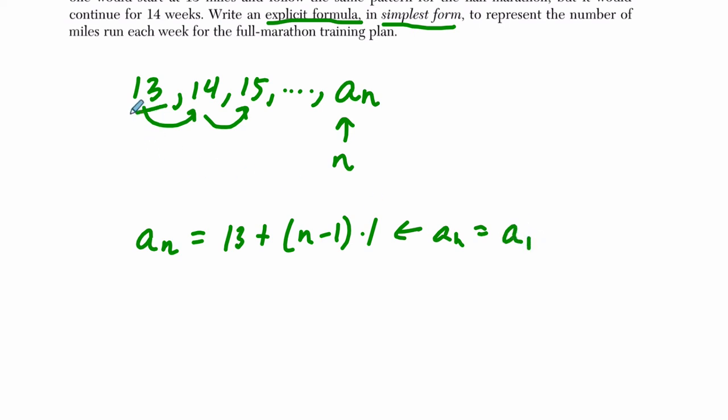That's the first term. And then we add n minus 1 times the common difference, which is essentially our slope. And if we simplify this, distribute the 1, I get 13 plus n minus 1, and a sub n equals 12 plus n. And then test your formula and see if it works.